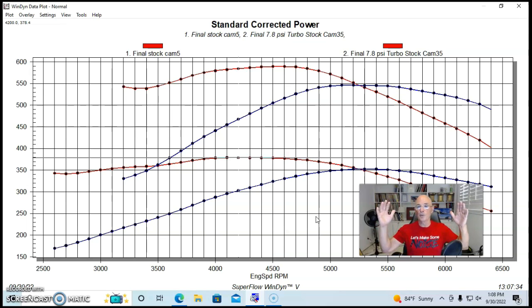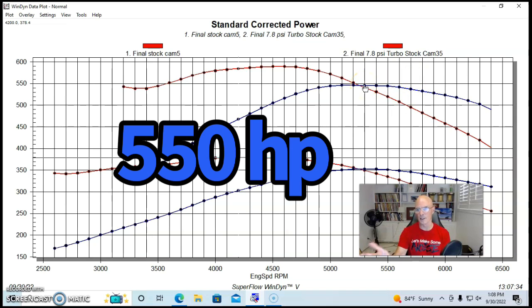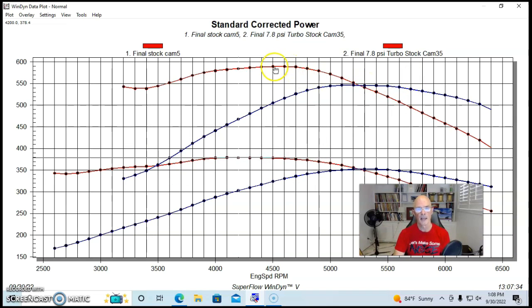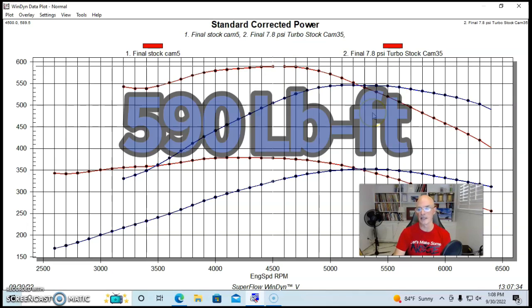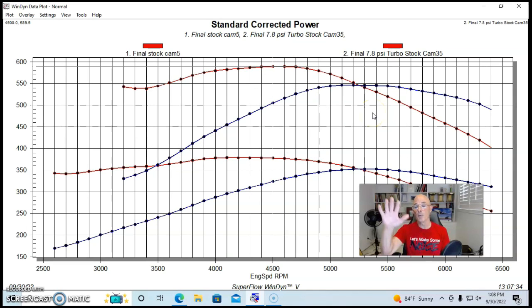Now we could run the boost up even further. This was around eight pounds. We could run the boost up even further. This thing was making 550 horsepower at 7.7 or 7.8 pounds and was making 590 foot pounds of torque. We could run the boost up and make more power, but the problem is you start getting diminishing returns. You have to run a lot of boost because your stock motor isn't really making very much power.